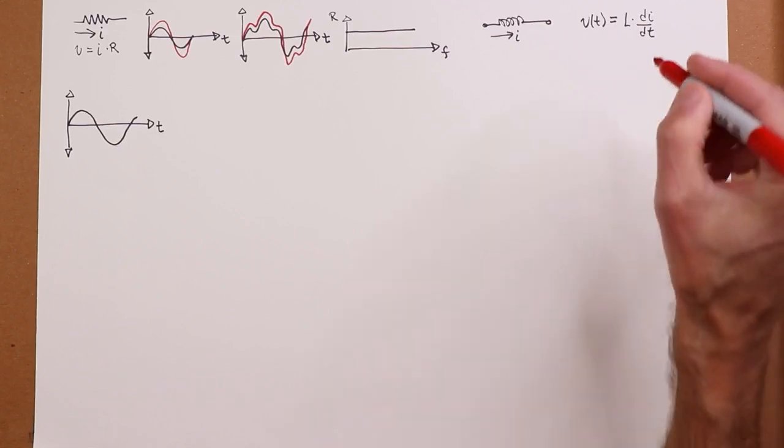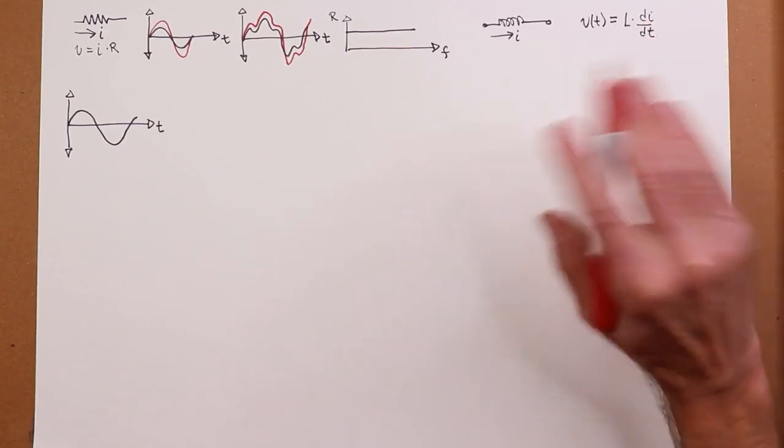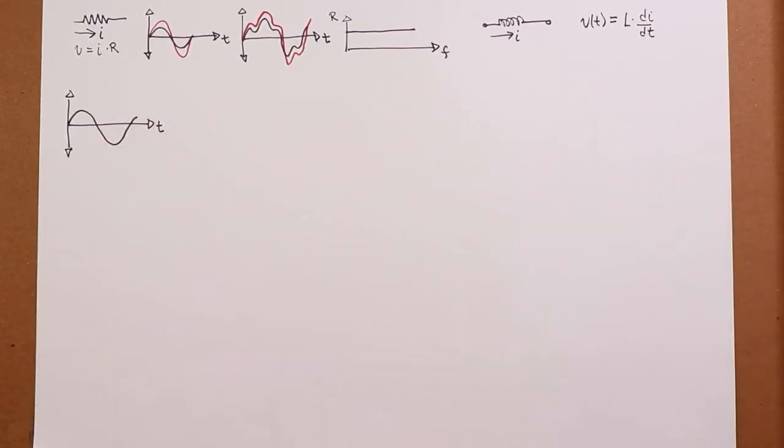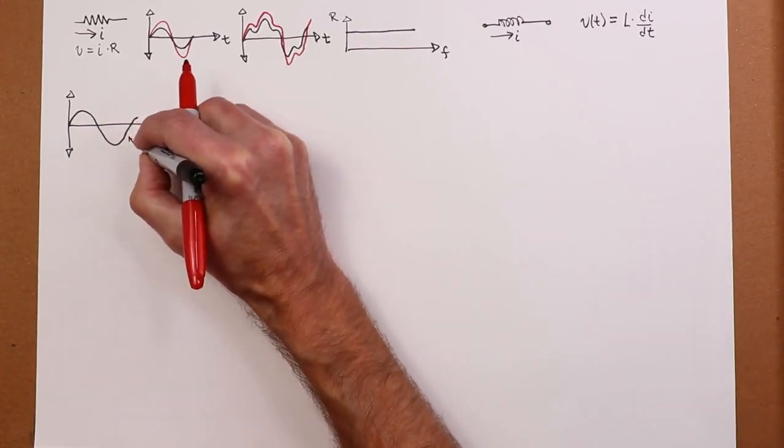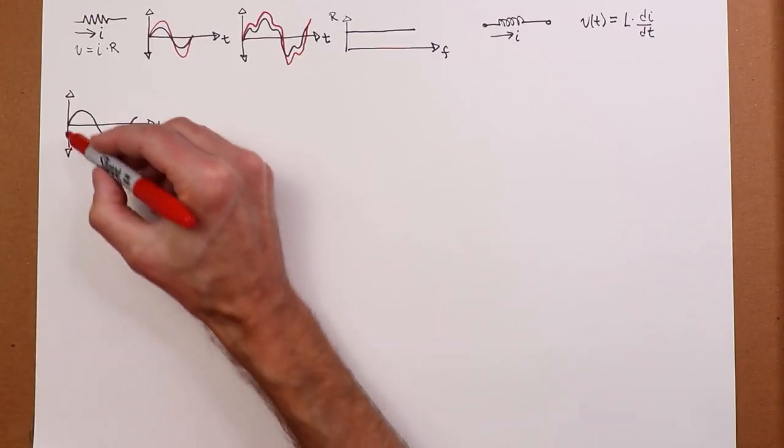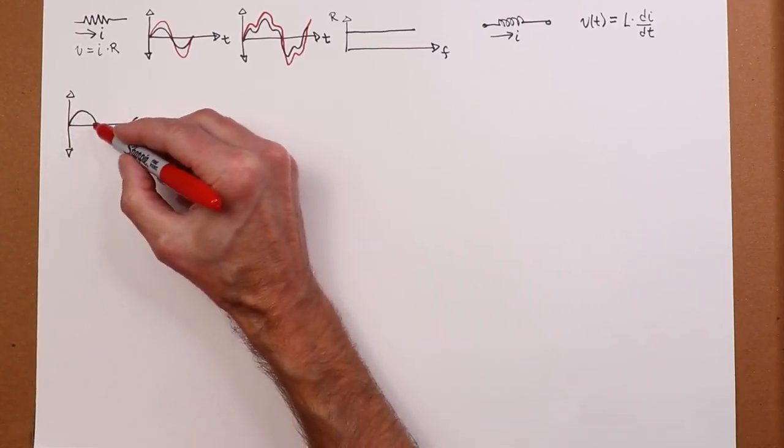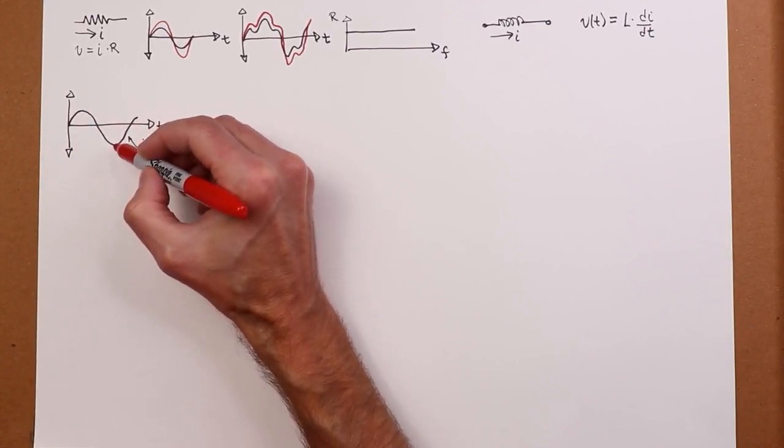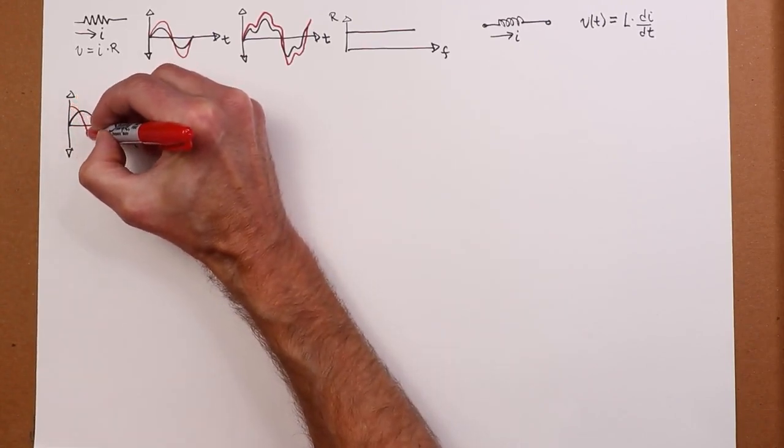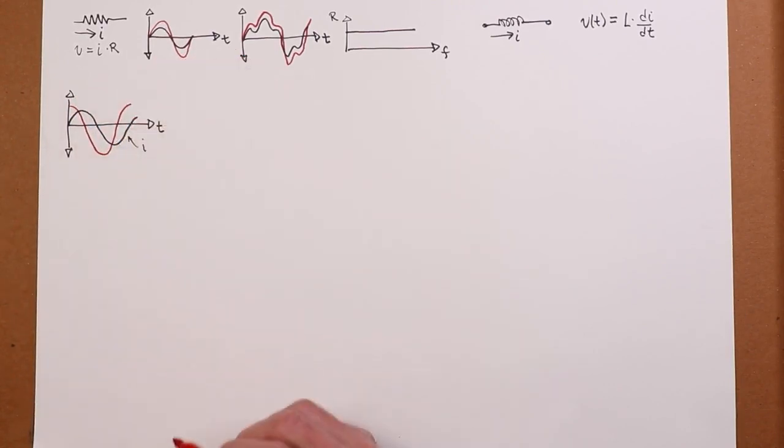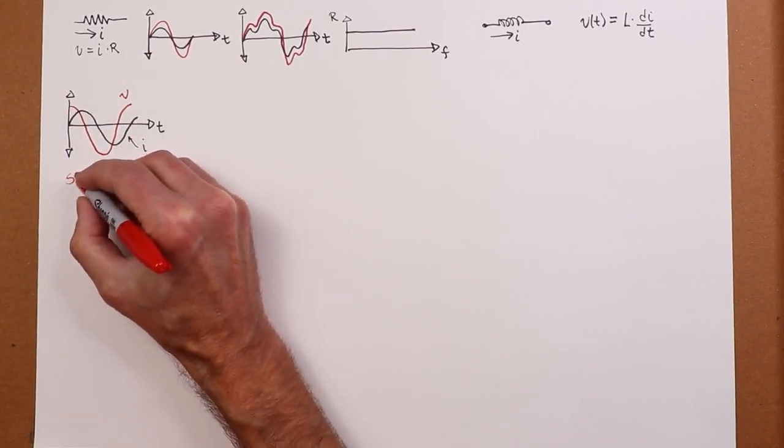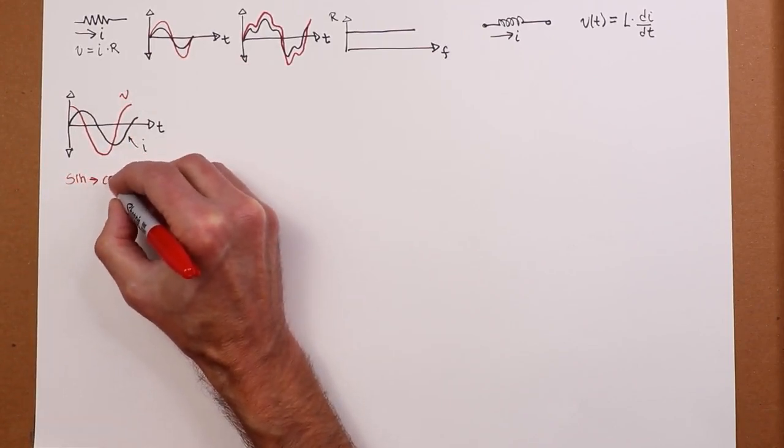So if we were to throw in a sine wave, let's start with the same thing here. So here's the current. Now, what's the shape of the voltage? It's the slope. Di dt is the rate of change, the slope, the steepness of that waveform. So if that's I, if the black over here is I, then my red here is going to be the slope. So it's really steep here, so I'm going to get a big number. It's really steep negative here, so I'm going to get a big negative number.